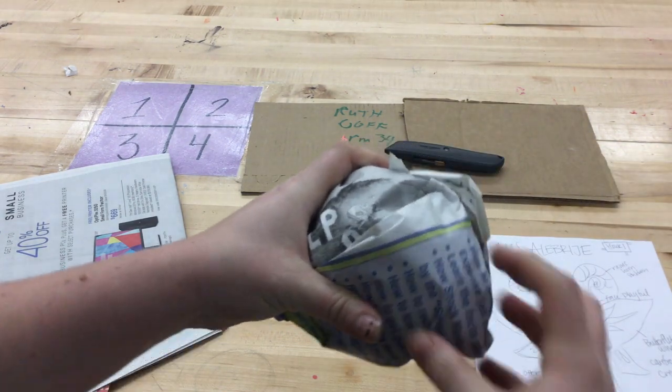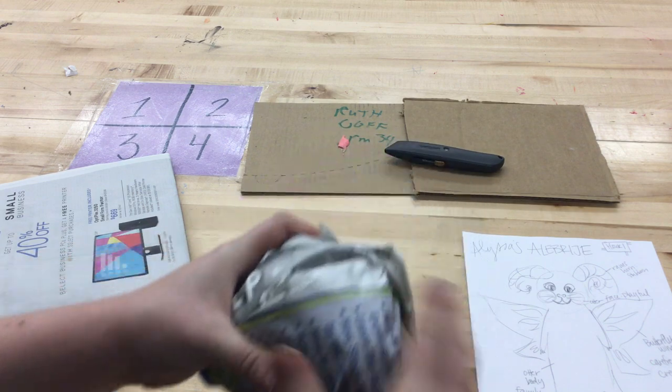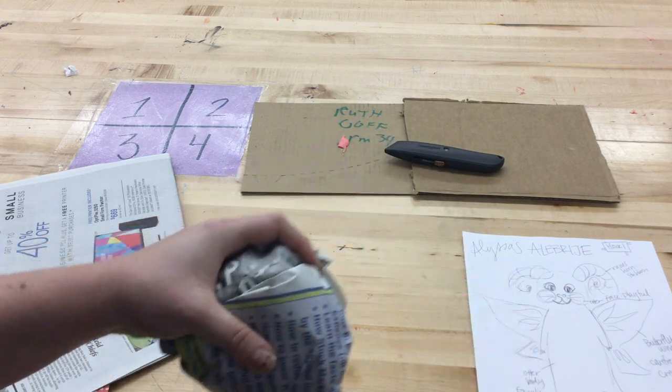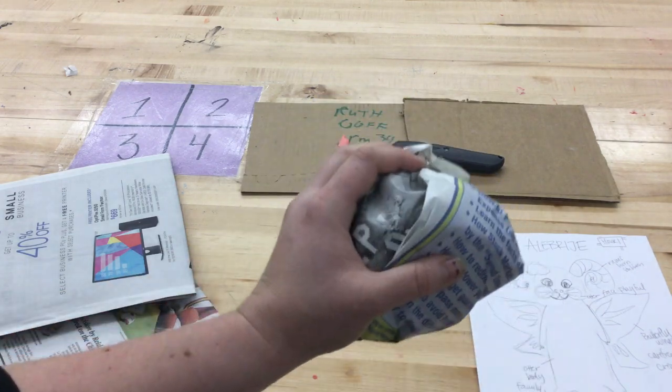Now if I was going from here I might want to add a snout if I was doing like a horse or a dog. To do that I would just take another piece of newspaper and add it on here. This looks good, good size of the head. You don't want it to get any bigger than this.